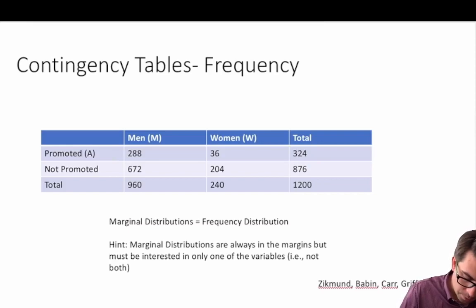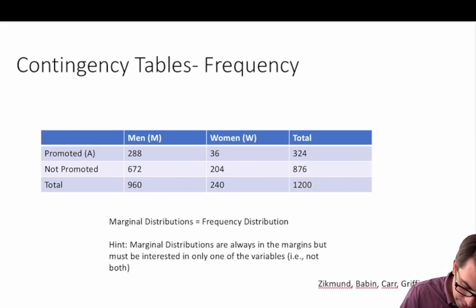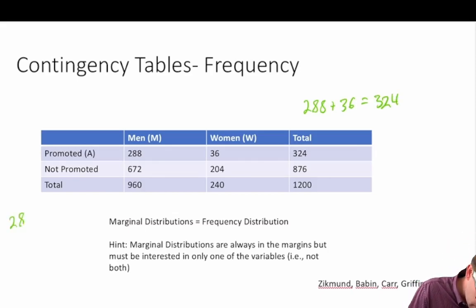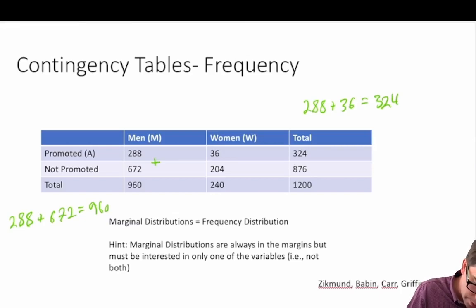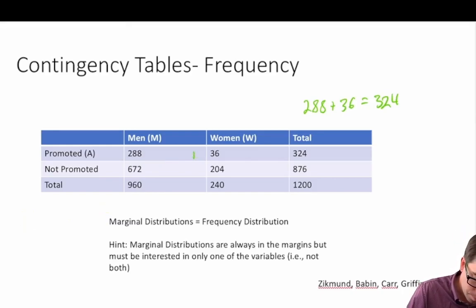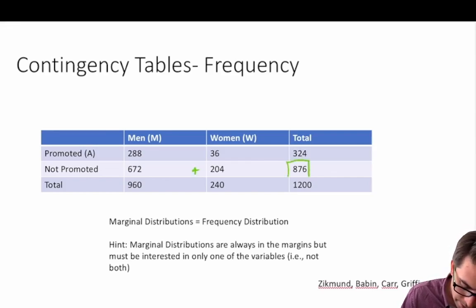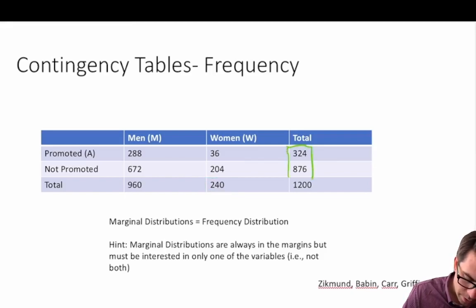A unique characteristic of these marginal values is that the sum of the values in each row equals the row total: 288 plus 36 equals 324. Similarly, 288 plus 672 equals 960, and 672 plus 204 equals 876. The same holds for all values in the table.